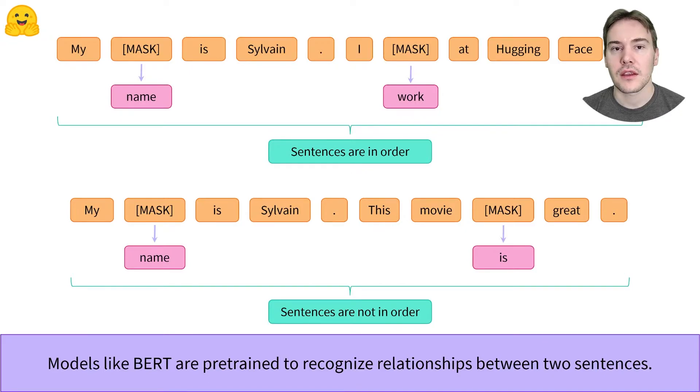For instance, during pretraining, BERT is shown pairs of sentences and must predict both the value of randomly masked tokens and whether the second sentence follows from the first or not.